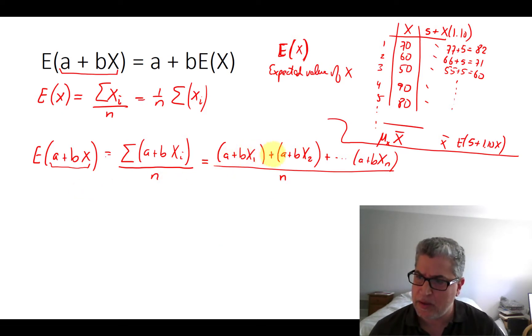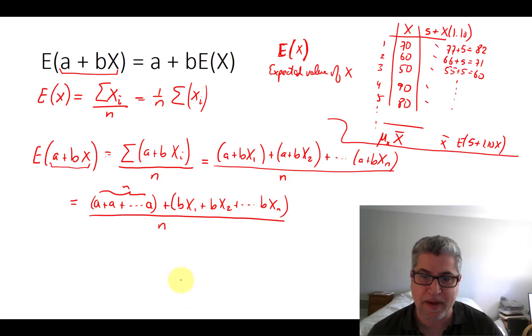Now we're just adding stuff here, so I don't really need those parentheses. And how many of these a's do I have? Well, I have one, two, all the way through to n. So I have n of these. So a plus a plus a, I've got n of these guys, plus bx1, bx2, all the way to bxn. And then again, don't forget, we're dividing through by n.